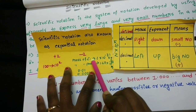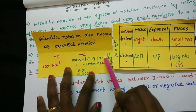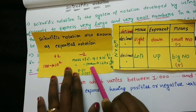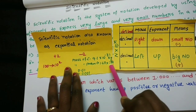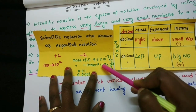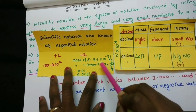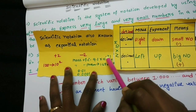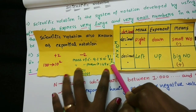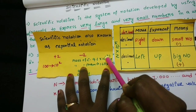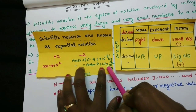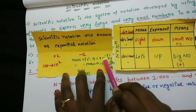Here is an example. The mass of 1 electron is 9.1 into 10 to the power of minus 31 kg. The mass of 1 proton is 1.67 into 10 to the power of minus 27 kg. The electron has a smaller value because 10 to the power of minus 31 is a much smaller number than 10 to the power of minus 27.